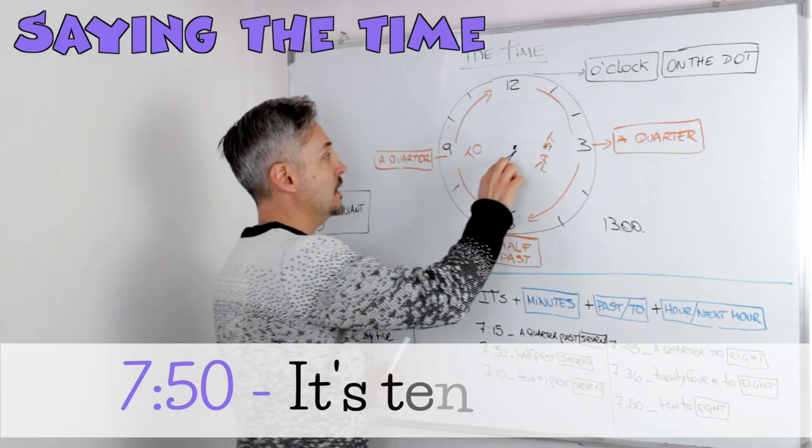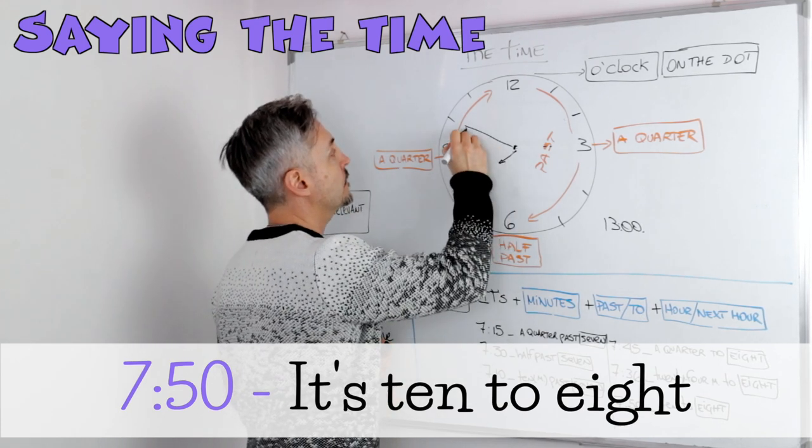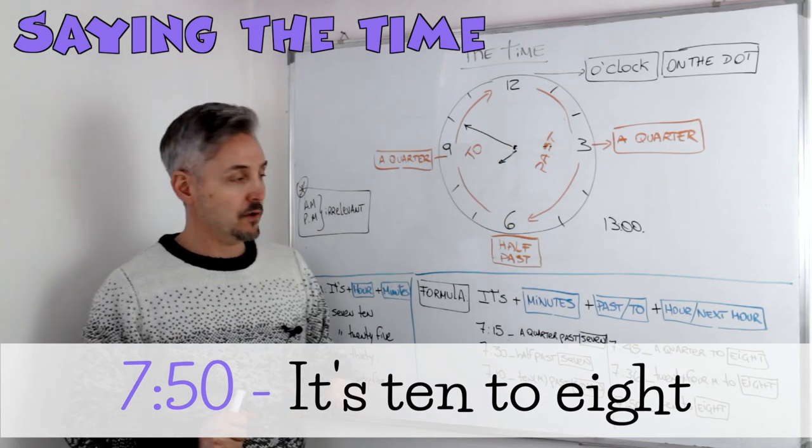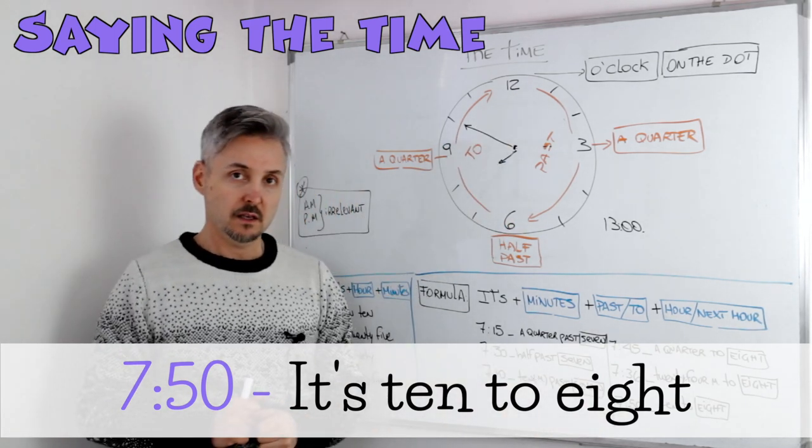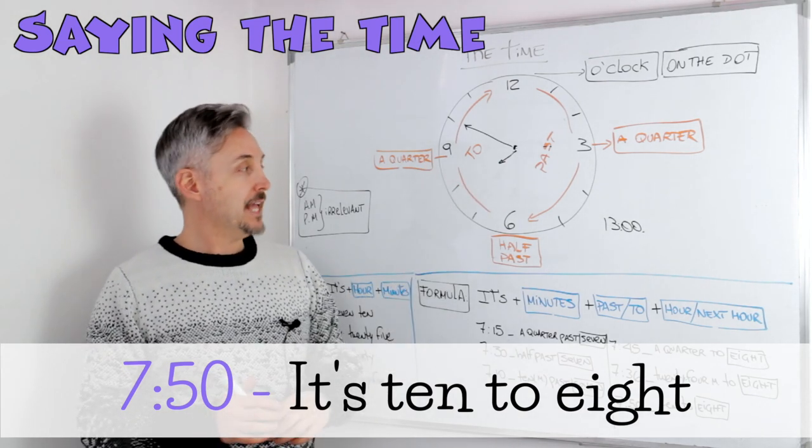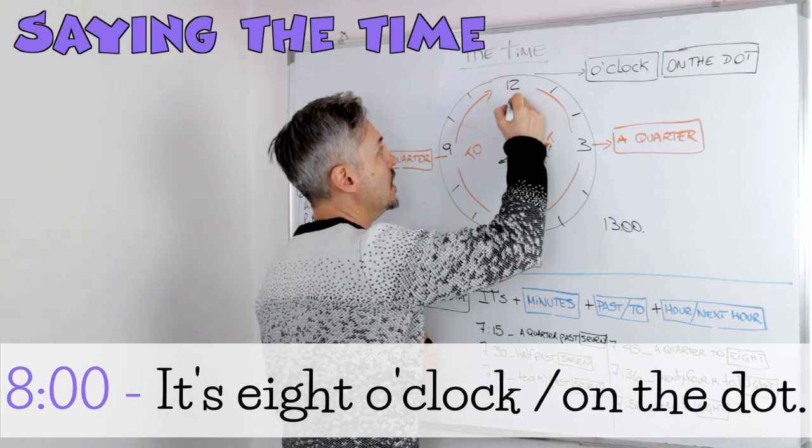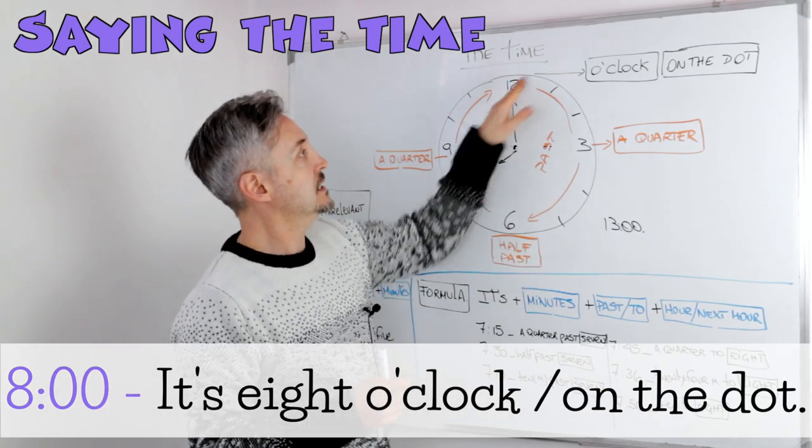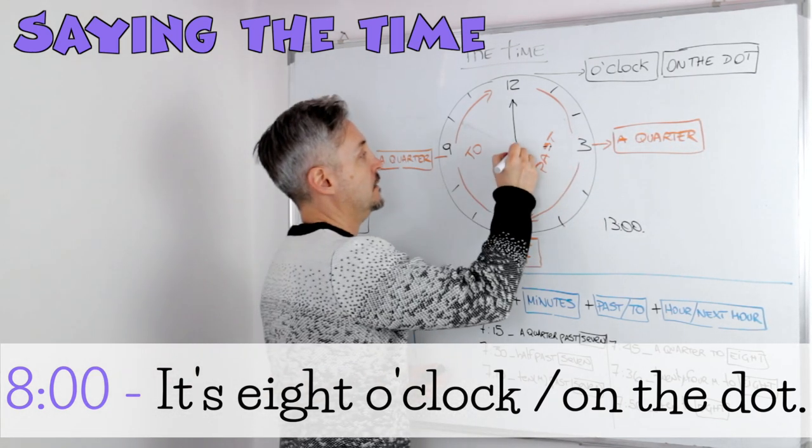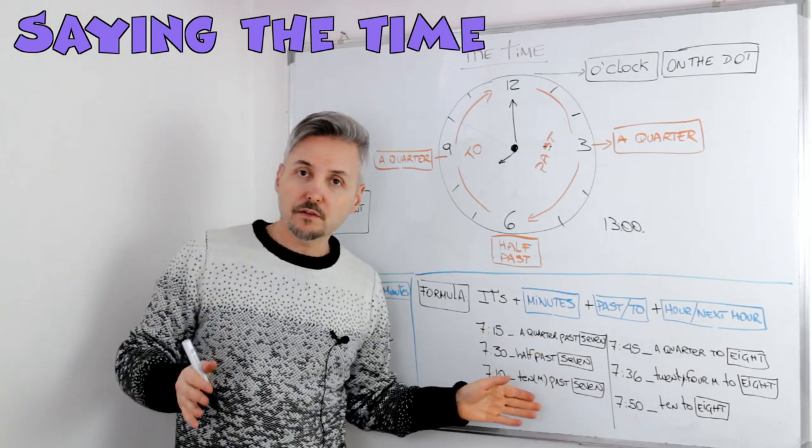24 minutes to eight. Now another example, it's 10, 10 minutes to eight, next hour, 7:50. This is the most difficult one. And if you want to say it's eight o'clock, you just say it's eight o'clock, or you can say it's eight on the dot, on the dot, right there, on the dot.